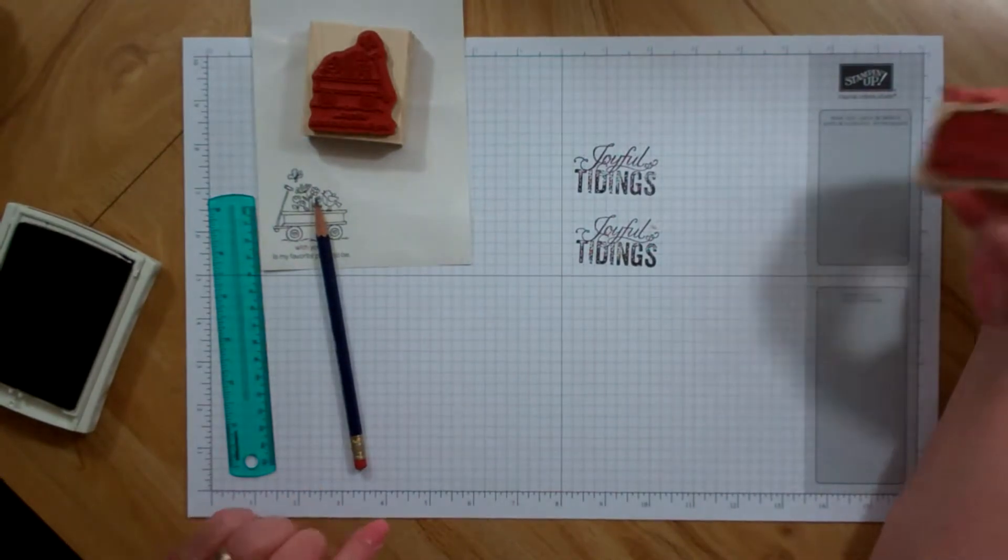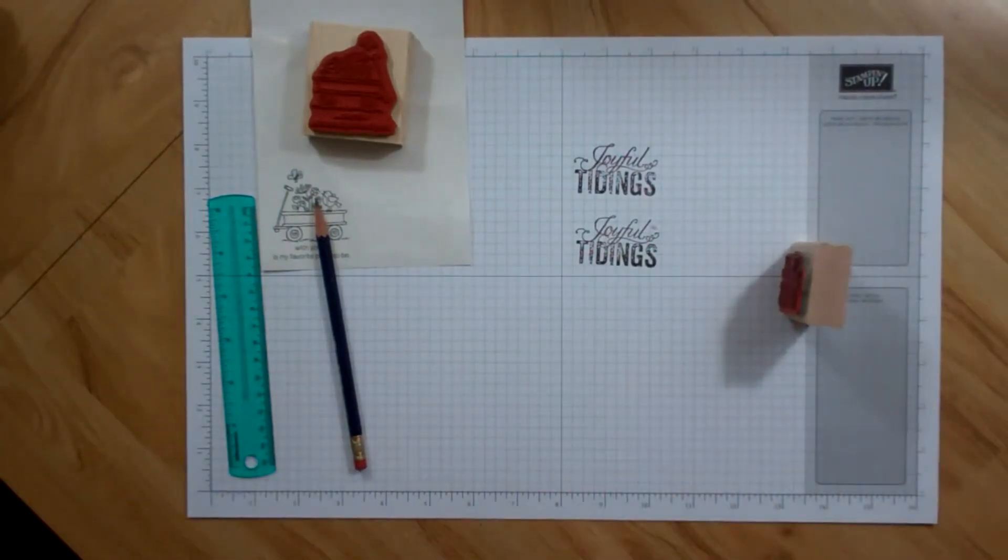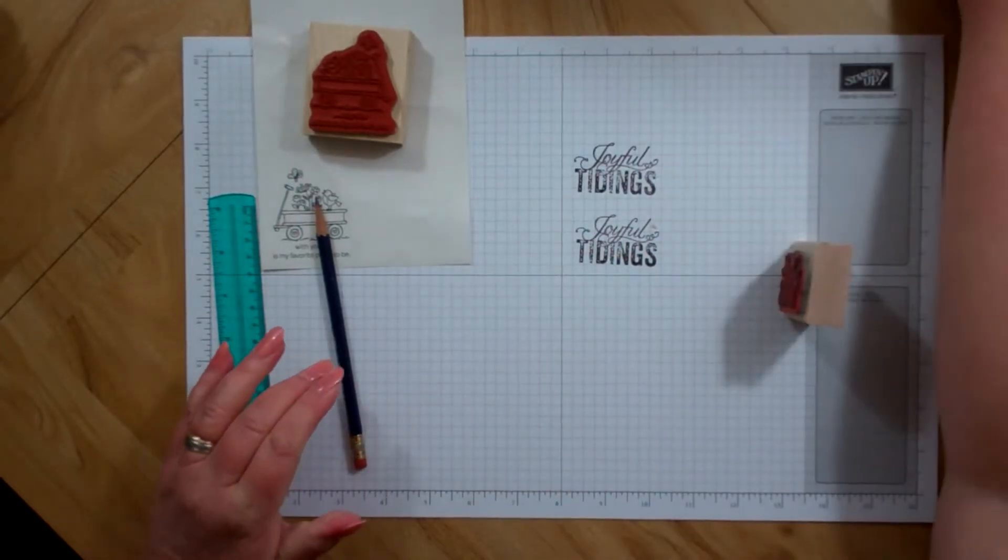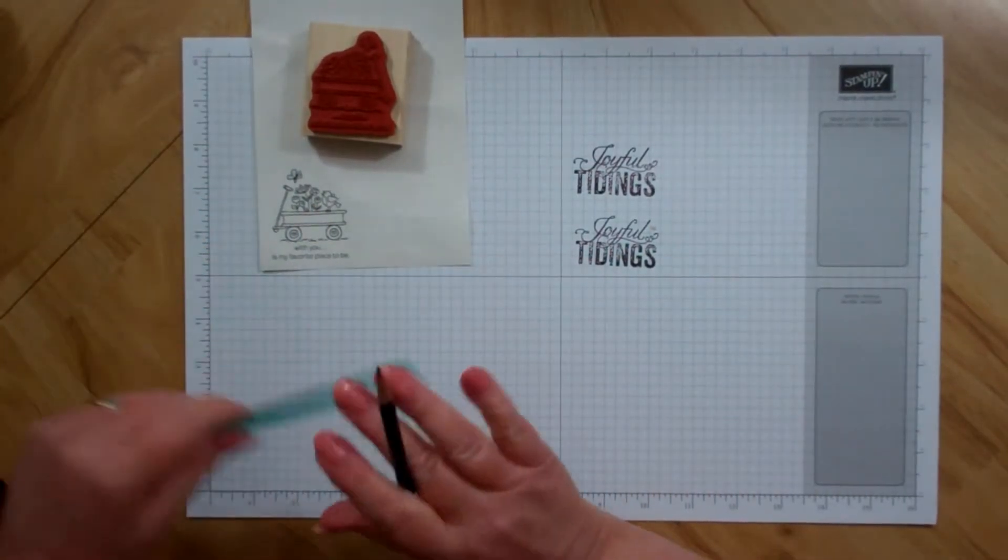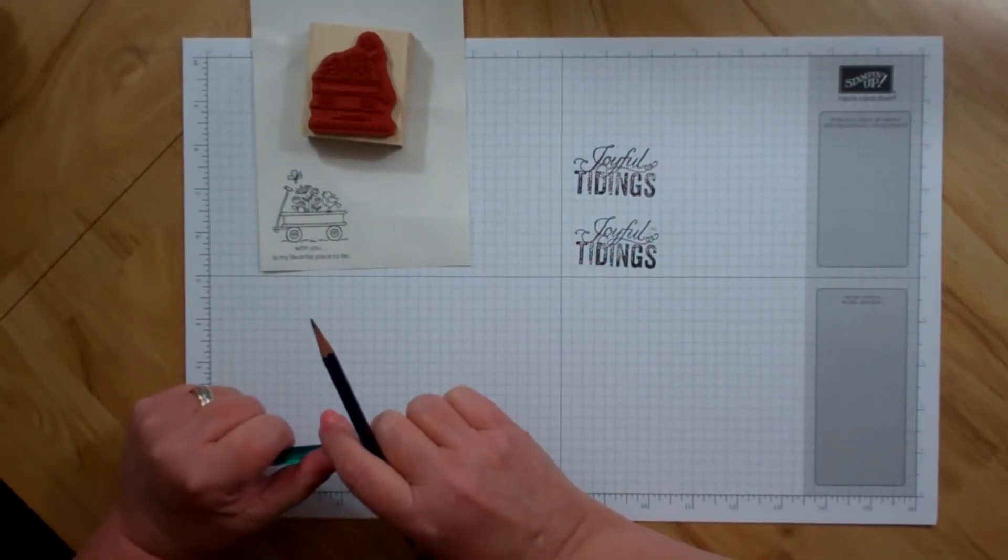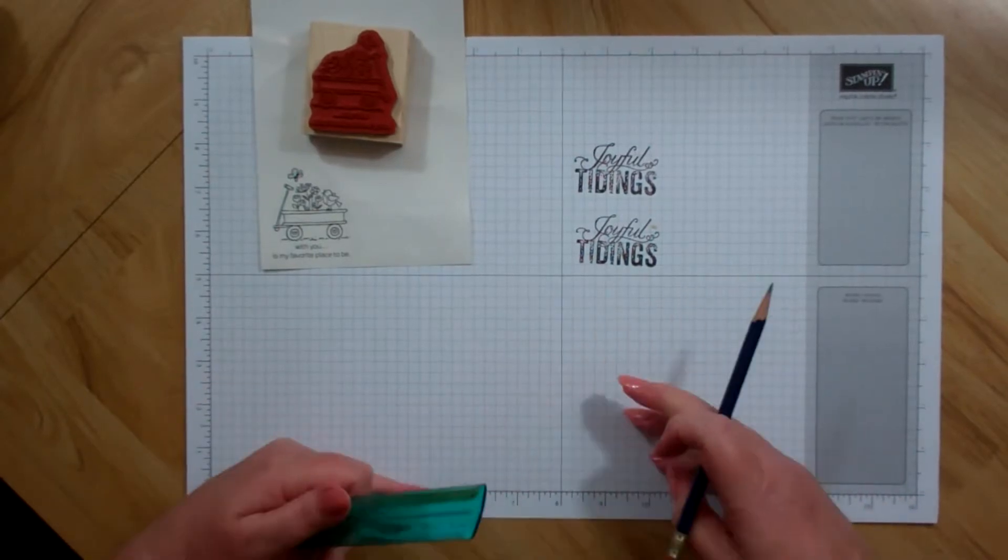There. So, that way you don't have to worry about having your stamps mounted crooked. You just need to make sure that you can line them up properly.